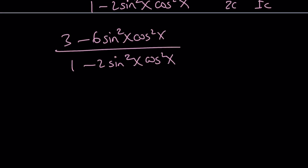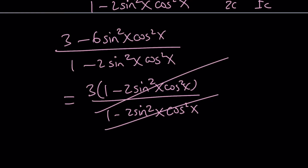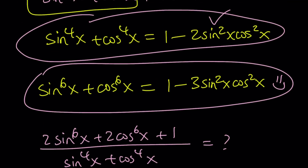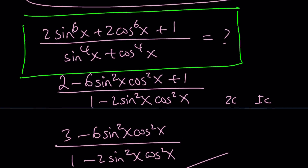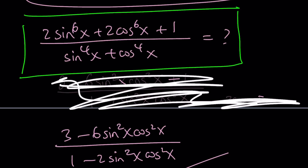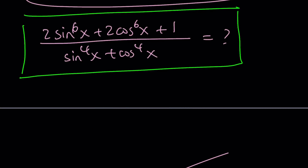Do you see it? We factor out 3 in the numerator: 3 times (1 minus 2 sine squared x cosine squared x), and that cancels with the denominator. So the answer is simply 3, as long as the denominator is not zero. Alternatively, you could substitute a specific value like x = π/6 (30 degrees) into the original expression, and you'd get the same answer. Please try it and let me know if you get 3.